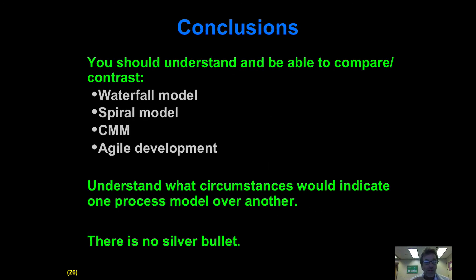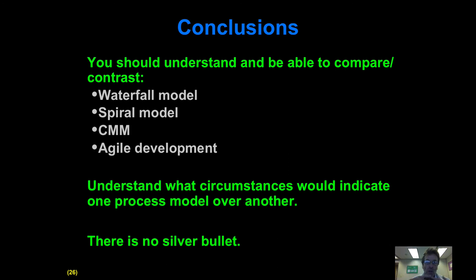So we've gone over four different models: waterfall, spiral, CMM, and agile. I would hope that you retain a notion of these process models. As you go into future environments, you should be able to think about whether one of these canonical types of models would be better or worse suited to the situation you find yourself in. Thanks a lot.